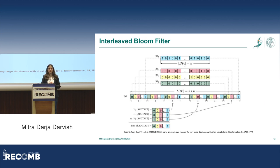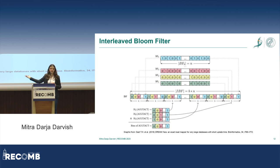If you search for a k-mer, you get a bit vector as an answer. You can easily see where this k-mer can be found — for example, in the first three experiments you can't find the k-mer.